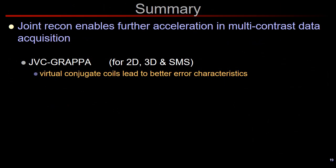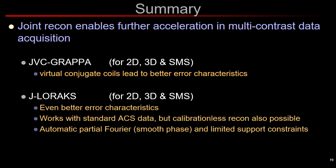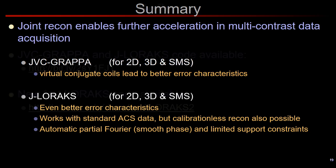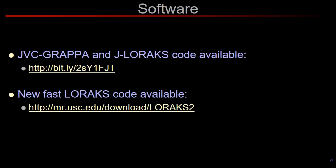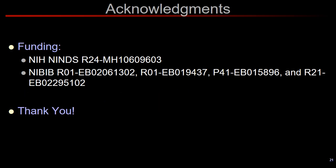To summarize, we show that it is possible to achieve higher acceleration factors by jointly reconstructing multi-contrast data. In particular, JVC-GRAPPA made use of virtual coils to improve the joint reconstruction performance, and J-LORAX improved on this by flexible use of partial Fourier and limited support constraints. Please feel free to try out our software, which can be downloaded from the provided links. Thank you very much for your attention.